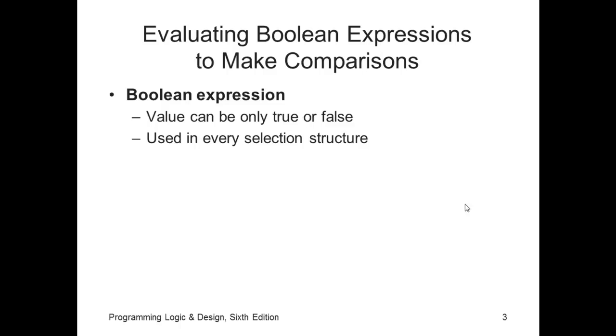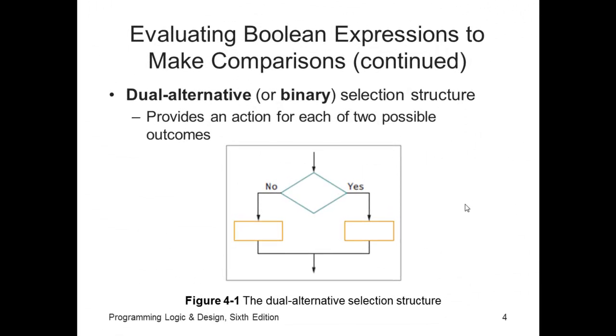Let's look at the first type of selection structure. It's called a dual alternative, or binary, bi meaning two, because it provides an action for each of the two possible outcomes.